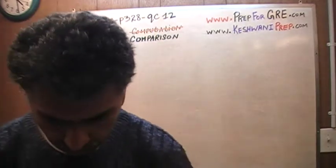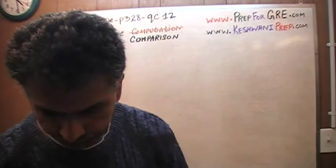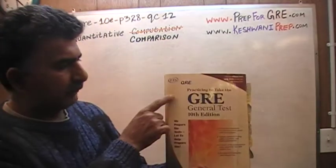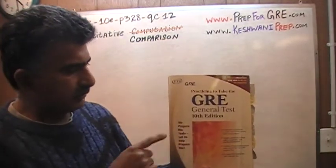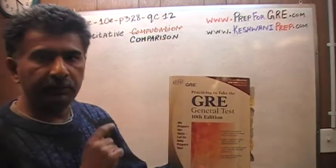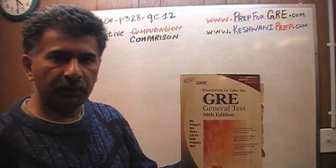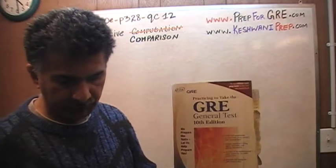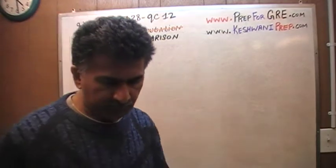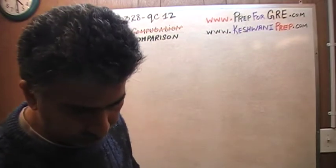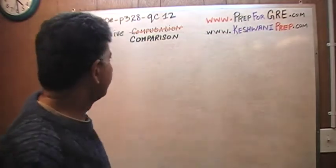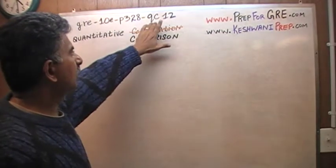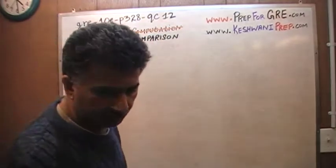I have been solving math problems with GRE out of this book here, practicing to take the GRE general test, the 10th edition. If you do not own this book already, purchase one immediately. The problem I'm about to solve is the one you're going to find on page number 328, quantitative comparison question number 12.